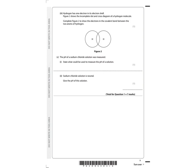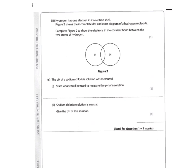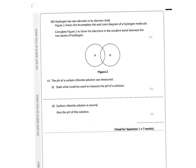Part three says hydrogen has one electron in its electron shell. Figure two shows an incomplete dot-cross diagram of a hydrogen molecule. Complete figure two to show the electrons in the covalent bond between the two atoms of hydrogen. Each hydrogen has one electron — we draw one from one atom as a dot and the other from the other atom as a cross, giving a shared pair of electrons in the covalent bond.